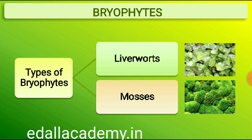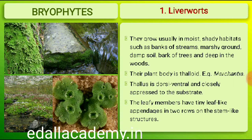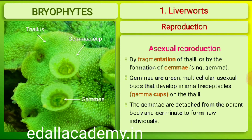The bryophytes are divided into liverworts and mosses. Liverworts grow usually in moist, shady habitats such as banks of streams, marshy ground, damp soil, bark of trees and deep in the woods. The plant body of a liverwort is thaloid — for example, Marchantia. The thallus is dorsiventral and closely appressed to the substrate. The leafy members have tiny leaf-like appendages in two rows on the stem-like structures. Asexual reproduction in liverworts takes place by fragmentation of the thallus, or by the formation of specialized structures called gemmae (singular: gemma). Gemmae are green, multicellular, asexual buds which develop in small receptacles called gemma cups located on the thallus.